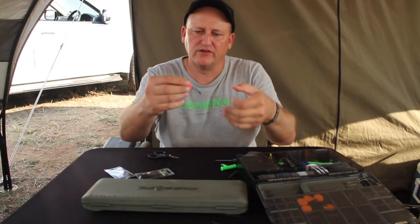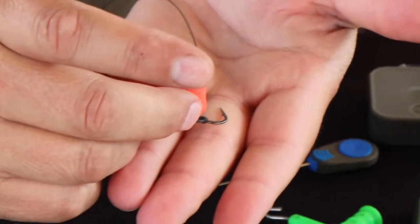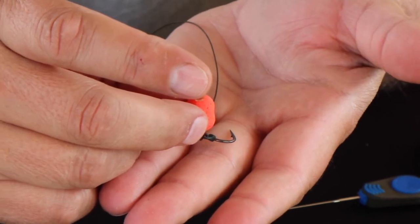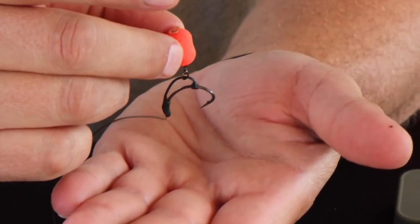And there I have the perfect D-rig. This is again, we showed it earlier on, this is a wafter. Hook is going to lie flat and the bait is just going to hover above it. The minute the fish picks it up, the hook is going to be proud.